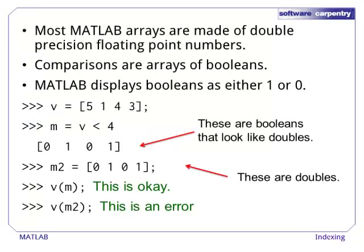The difference is apparent in this example. Here the array m is the result of a comparison, and we can see that a 1 means that the corresponding element of v was less than 4. The array m2 is hand-constructed with the same pattern as m, but the values are doubles since this is the default.